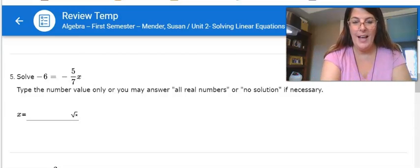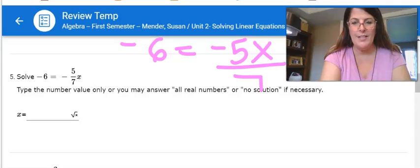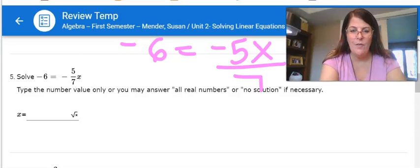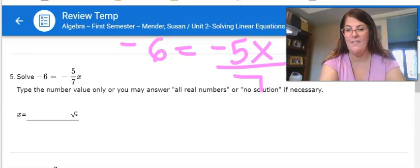The first thing I want you to recognize is this is negative 6 is equal to negative 5x over 7. So the negative with the 5 7ths doesn't go with both of them. It only goes with one, the negative 5 or the 7.